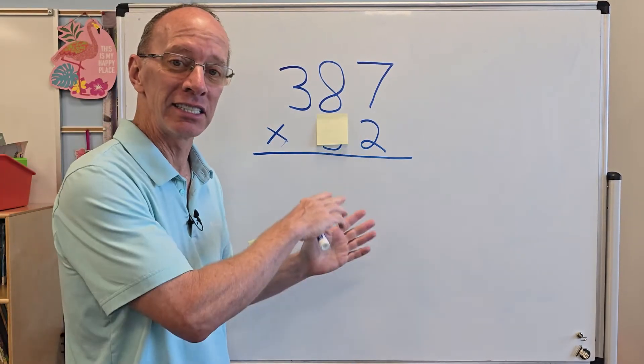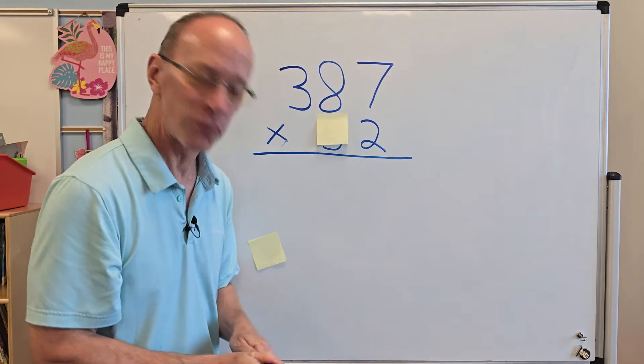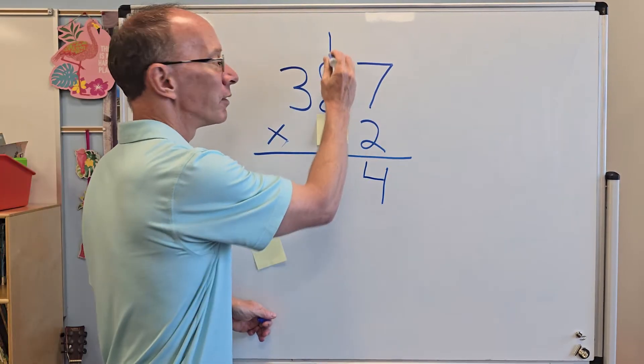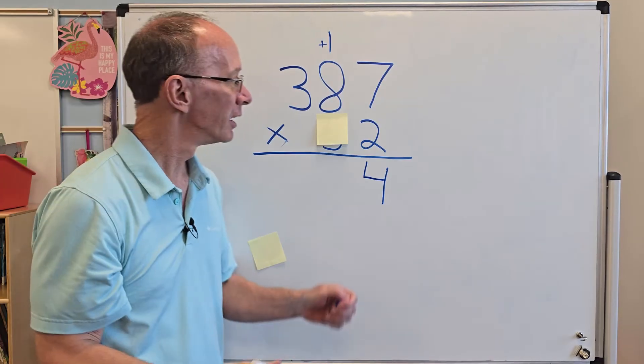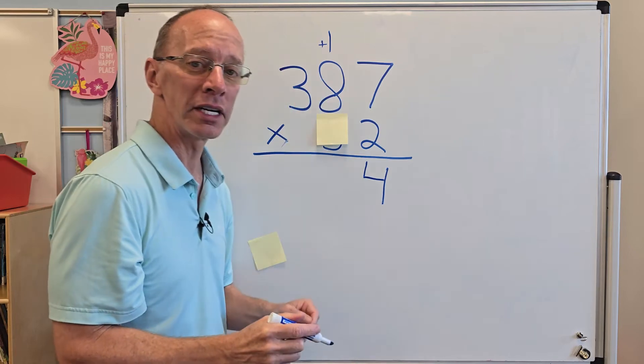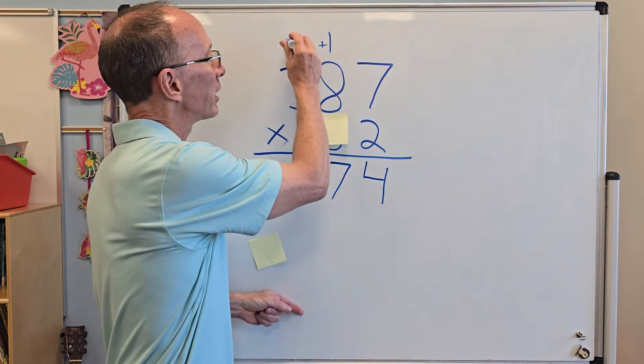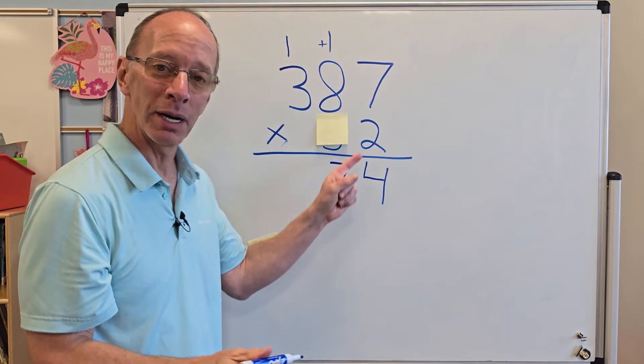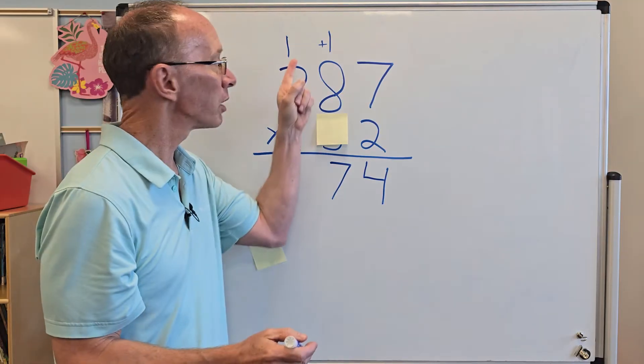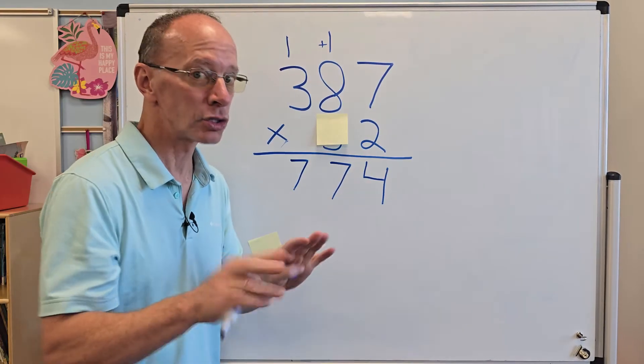So now I can just easily do my multiplication with the two. So two times seven, what would that be? Fourteen. So I'm going to put a four right here, and then I'm going to carry the one. So now I'm going to take two times eight equals 16 plus the one equals 17. So I put the seven right here, put the one up there. So I have two times three equals six plus the one, seven. So I have 774 so far.